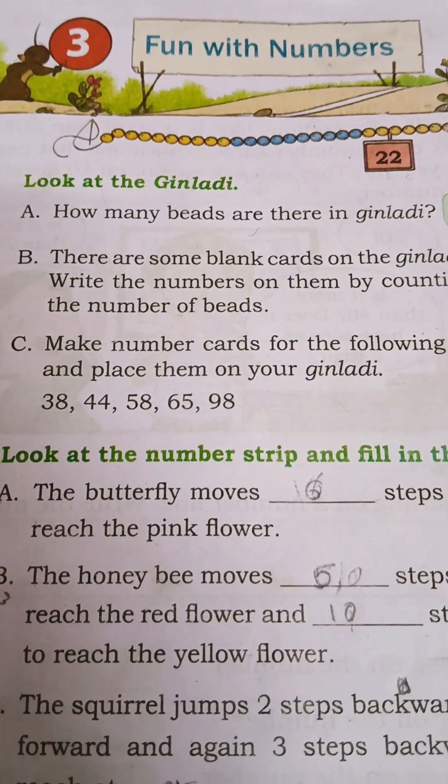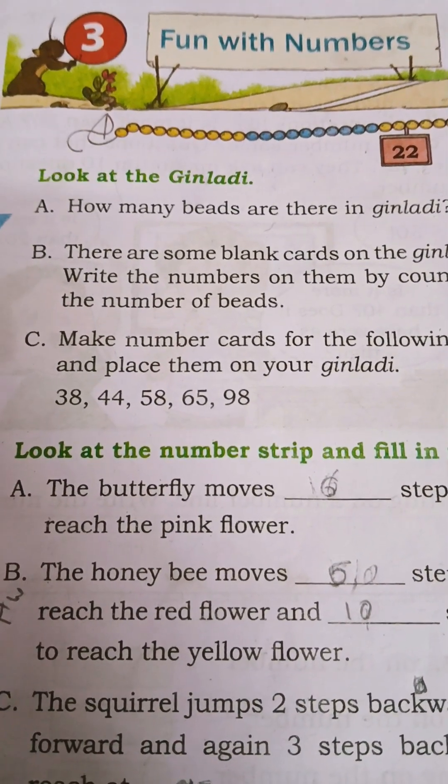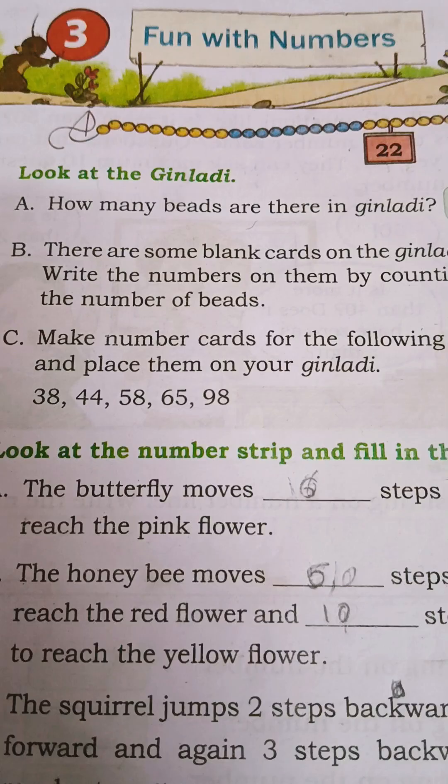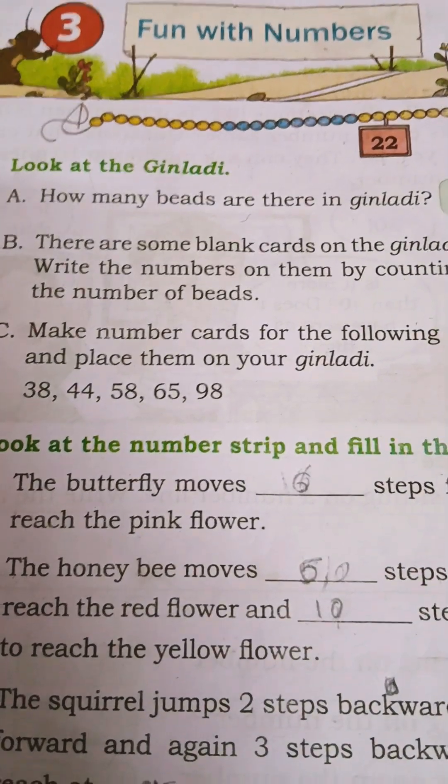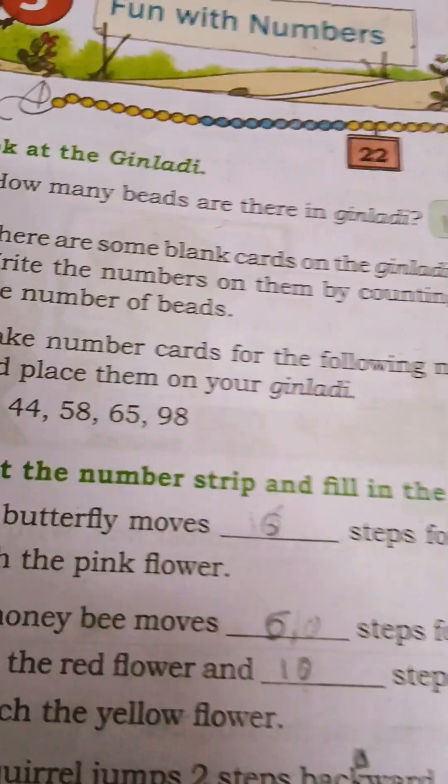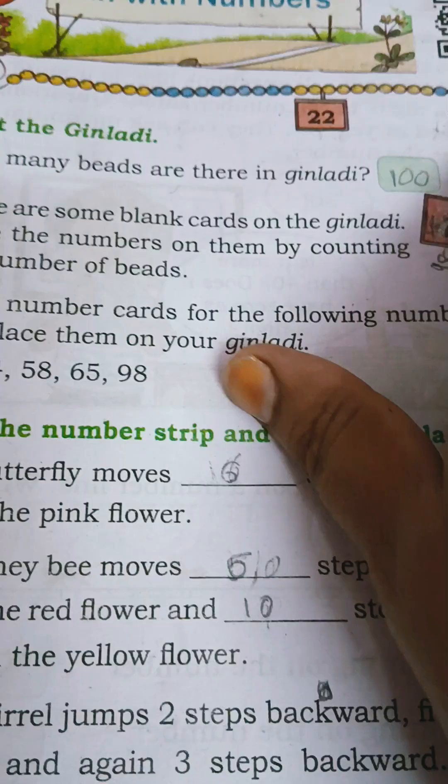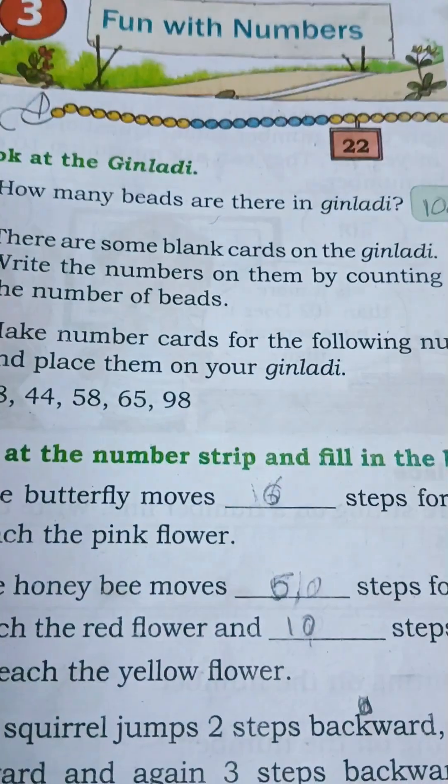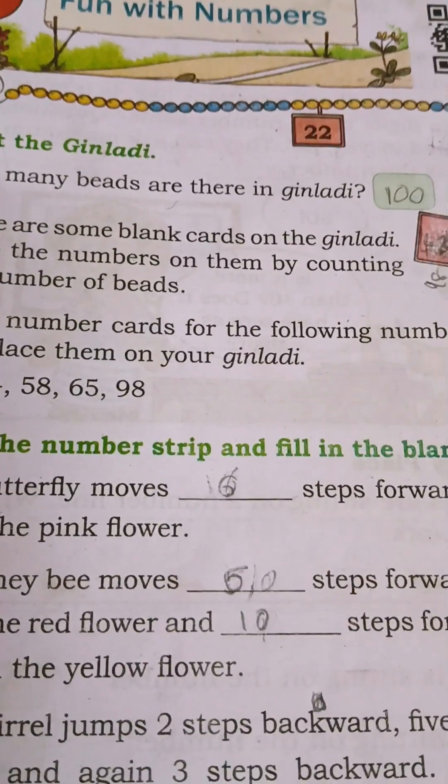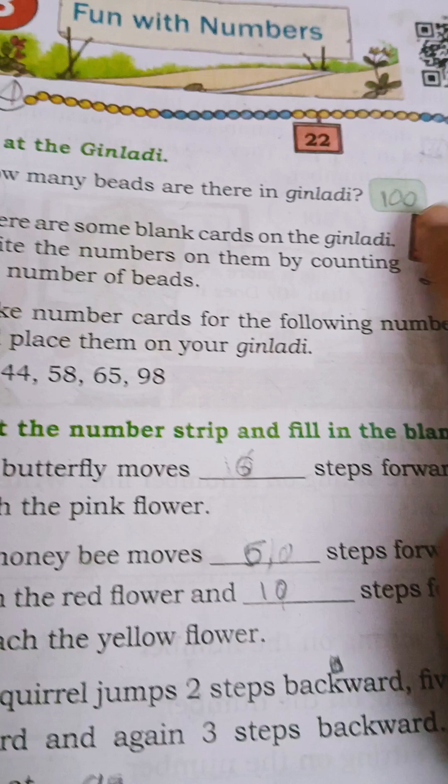Fun with numbers, Chapter 3. Look at the Ginladi. How many beads are there in Ginladi? This is called Ginladi. In this you have to count how many beads: 1, 2, 3, 4, 5... total 100 beads are there. Answer is 100.